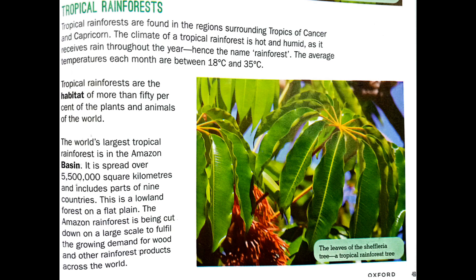The world's biggest tropical rainforest is in the Amazon Basin. The Amazon Basin is a region in South America. It is spread over 55 lakh square kilometers and includes parts of nine countries. It is a lowland forest on a flat plain, but it is being cut down on a large scale to fulfill the growing demands for wood and other rainforest products.